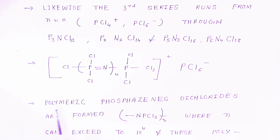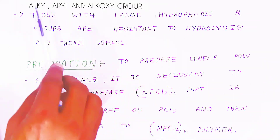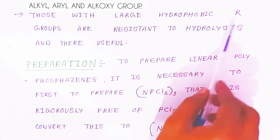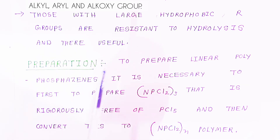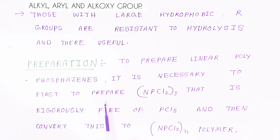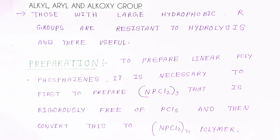Polymeric Phosphazene dichlorides have the formula (NPCl2)n, where n can range from 10 to 4. These polymers may carry alkyl, aryl, or alkoxy substituent groups. Those with large hydrophobic alkyl groups are resistant to hydrolysis and are therefore useful. To prepare linear polyphosphazenes, it is necessary to first prepare (NPCl2)3 rigorously free of phosphorus pentachloride, and then convert this into (NPCl2)n polymers.